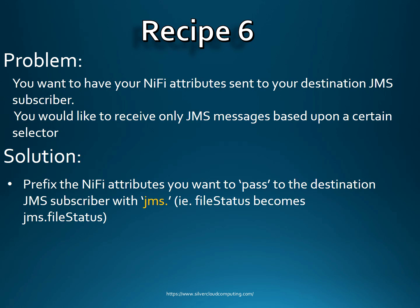For sending out the JMS messages that propagate through to your JMS client, on the producer side or the put JMS side, you want to prefix all your attributes with the characters JMS dot. Basically, any attribute that starts with JMS dot will get passed through to your JMS client as an attribute. For example, the attribute file status — you would actually call it JMS dot file status to guarantee that it will get passed through to your JMS client.